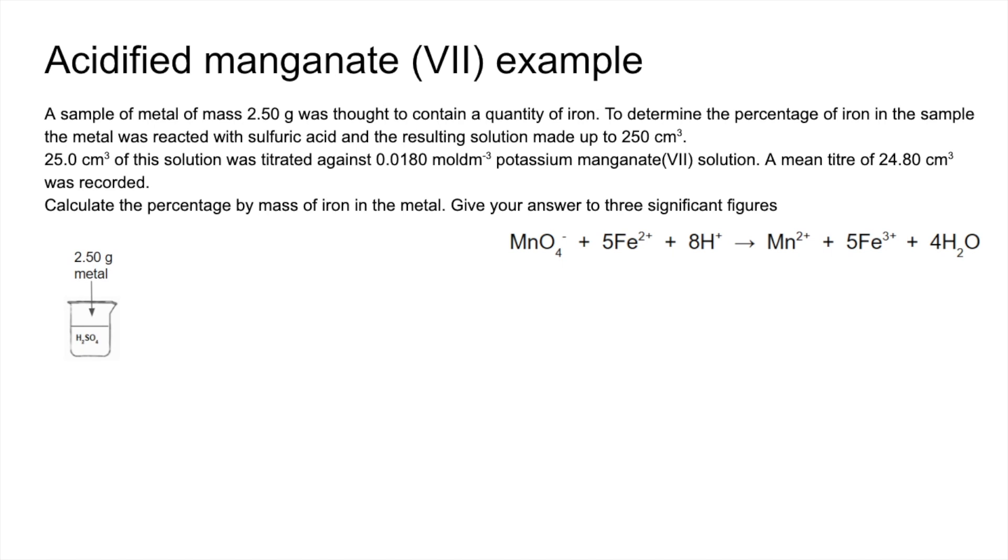So they've taken two and a half grams of a metal which contains some iron and dropped it in some sulfuric acid. And what that's doing is it's turning the iron atoms in the metal into Fe2+ ions. As you can see, there's a one-to-one ratio there between those two. That's important.